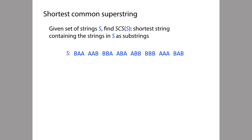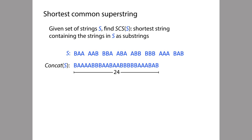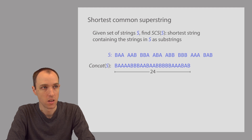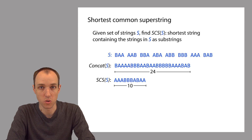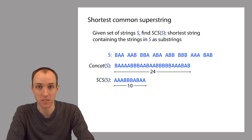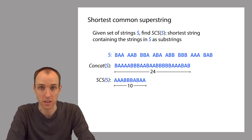If we didn't have the requirement that the superstring be the shortest, then this problem would be easy — we could simply concatenate all the strings in the set S. That gives a string containing all input strings as substrings, but it's not the shortest. It turns out this other string is the shortest common superstring: it contains all the input strings as substrings, and there is no shorter string that does so.